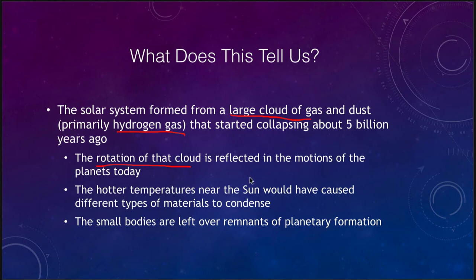If we look at that collapsing cloud, there would have been hotter temperatures near the Sun, which caused different types of materials to condense. Hotter temperatures near the Sun means that rock and metal materials formed planets close to the Sun, while icy materials formed further away. That gives rise to the two types of planets that we see.